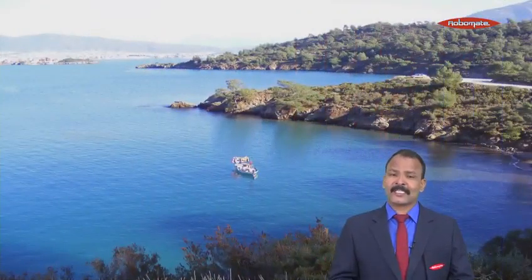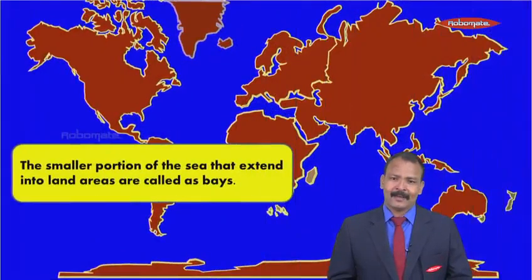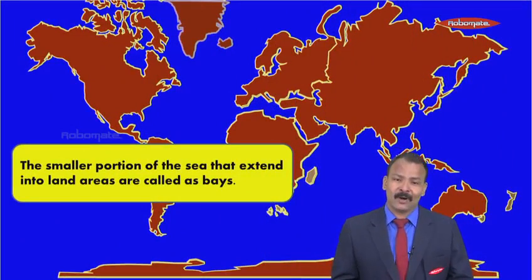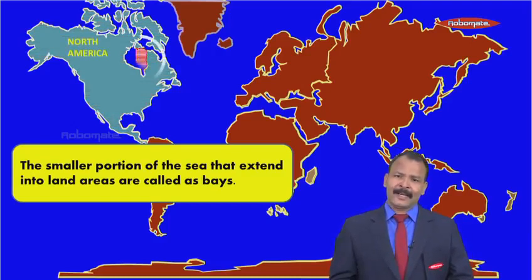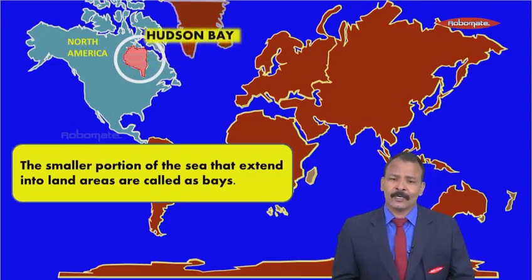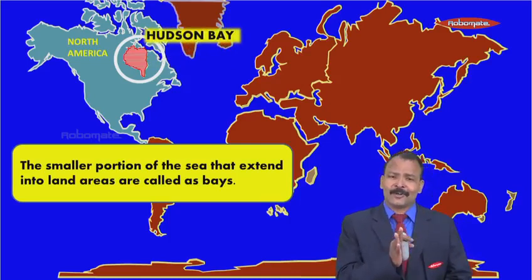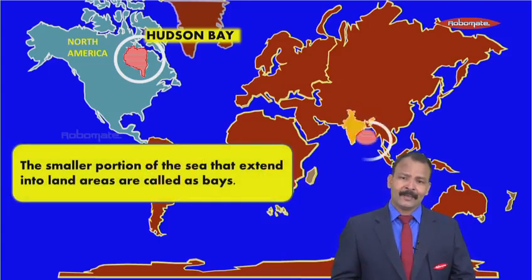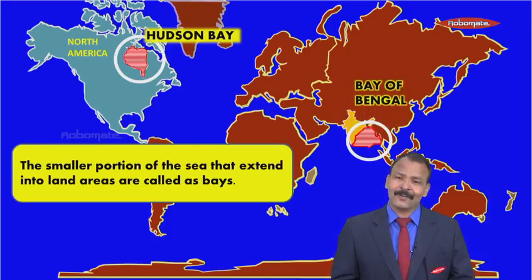The next water body is a bay. A bay is a small portion of the sea that extends into the land area. For example, in North America, Hudson Bay is an extension of the Atlantic Ocean. Similarly, coming to India, the Bay of Bengal is an extension of the Indian Ocean.